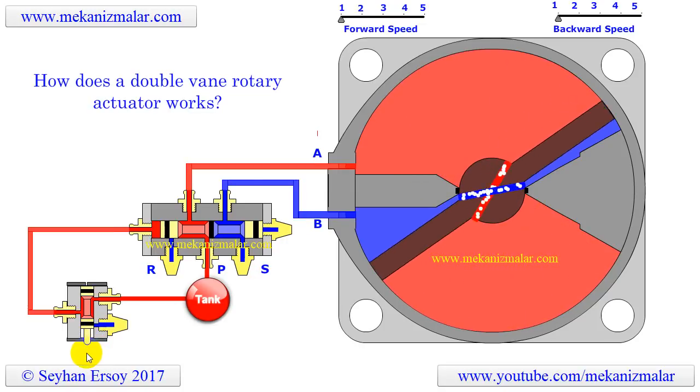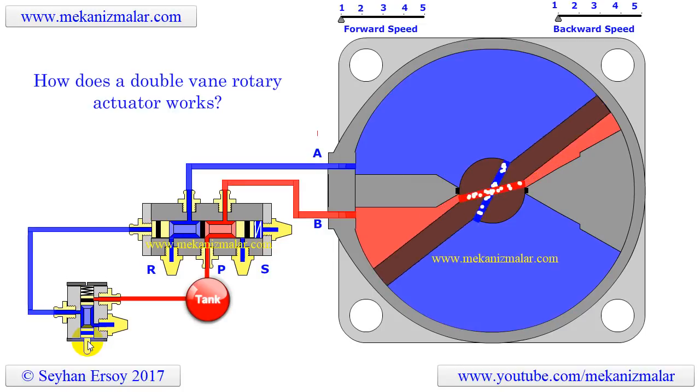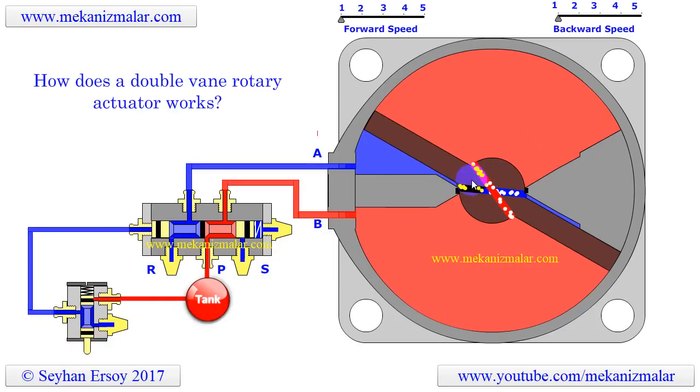Since there are four fluid chambers and two connecting ports for double-vane rotary actuators, the corresponding pressure chamber must be connected by two channels at the middle of the rotating vane.